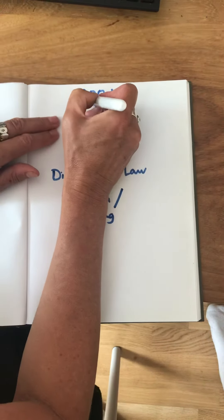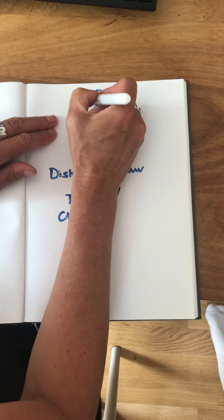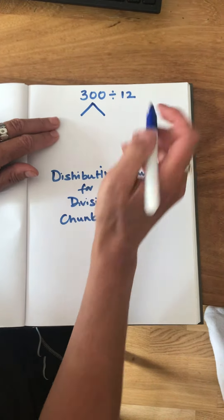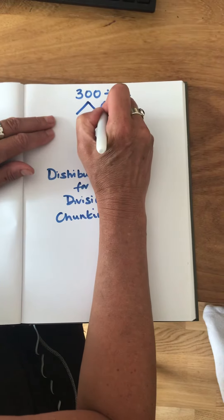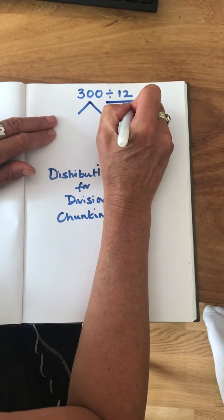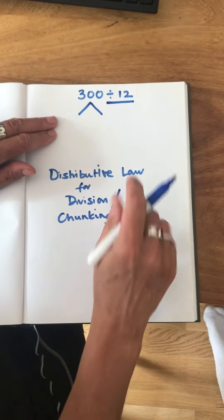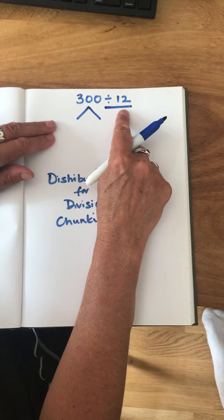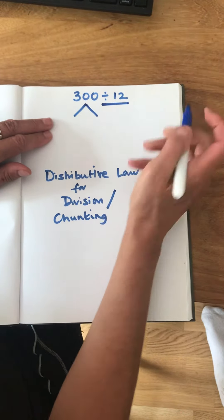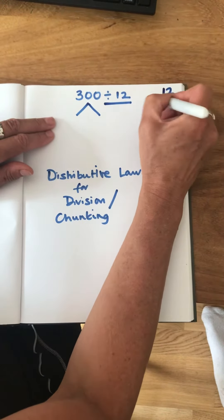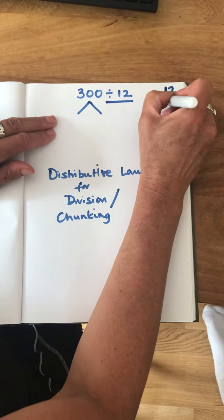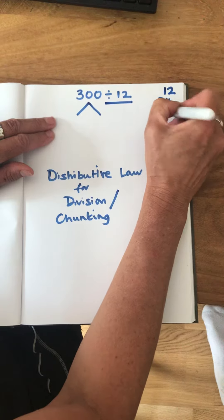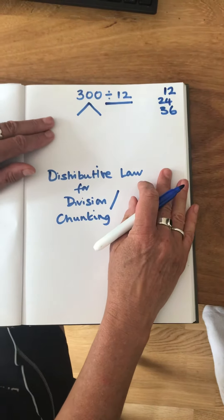The first thing we're going to do is partition 300, and we're going to partition it by multiples of the divisor. So if we think about multiples of 12: 12, 24, 36 — these are multiples of the divisor.